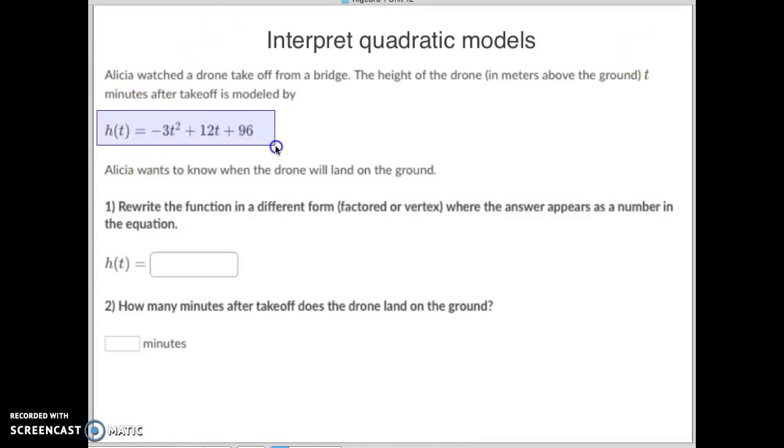They're going to give you an equation in standard form and you're going to have to rewrite this either in factored form or in vertex form. Basically what you're trying to do is make sure that you can answer this question super easily based on the form. So if this one is asking for a vertex question, then you're going to want to put it in vertex form. If this one is asking an x-intercept question or a zeros or a root question, then you want to put it in factored form.